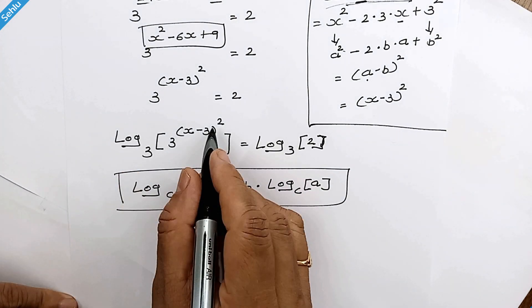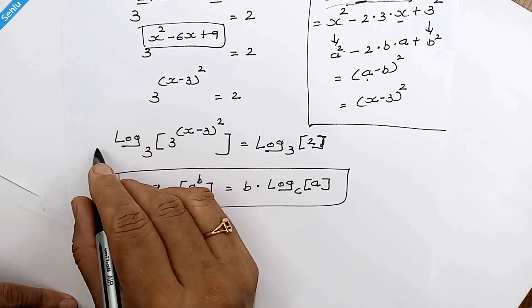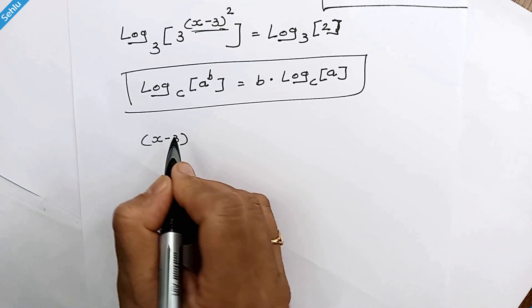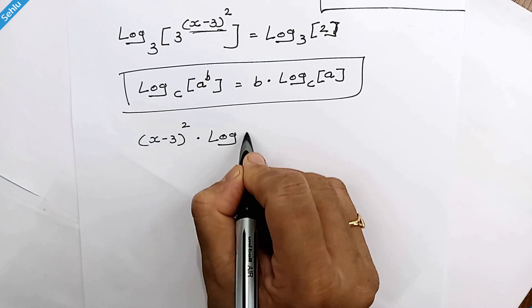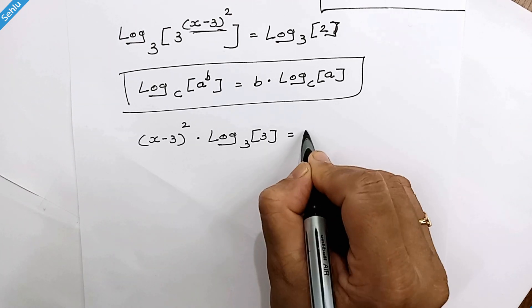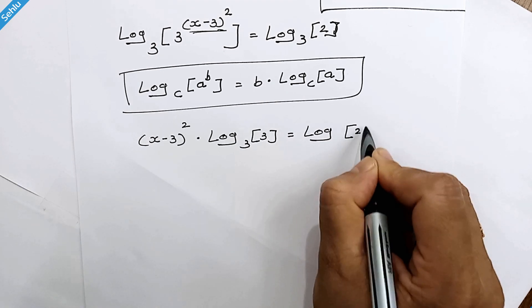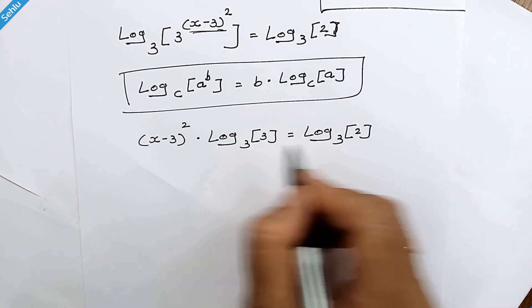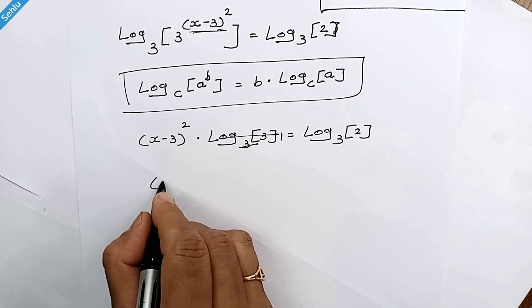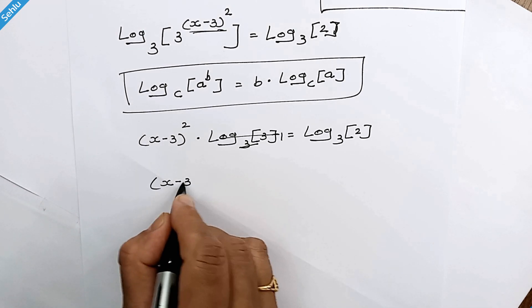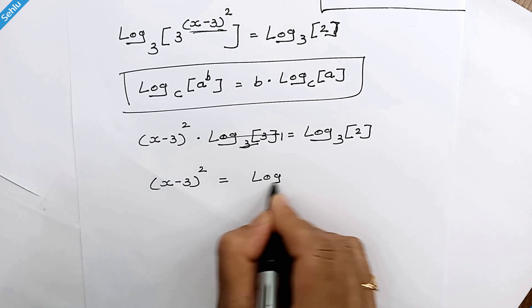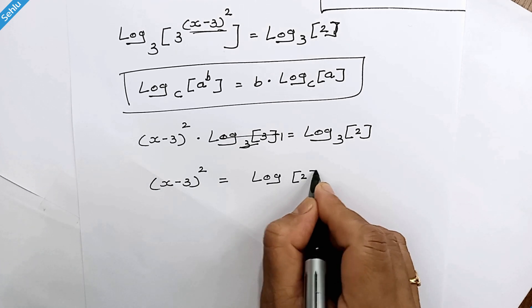According to this rule, this exponent can be here as a factor. (x - 3)² times log base 3 of 3 equals log base 3 of 2. Now this will be 1, so we have (x - 3)² equals log base 3 of 2.